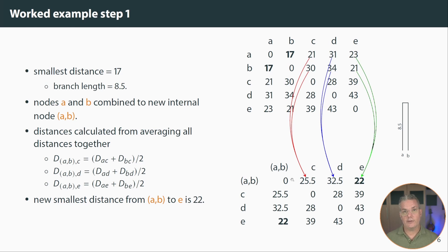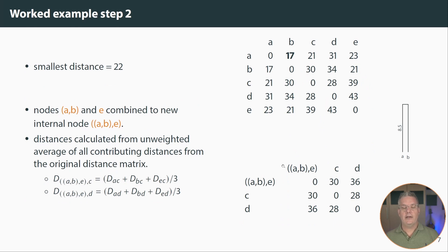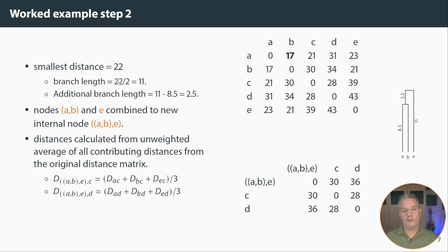We'll combine AB with E, where the smallest distance is 22. Using the original distance matrix, the branch length will be 11 — that's 22 divided by 2. E's branch length to the common ancestor of E, A, and B is 11, but since we already have a branch length of 8.5 on the AB lineage, we only need an additional 2.5 on the remainder. That gives us the partial tree.